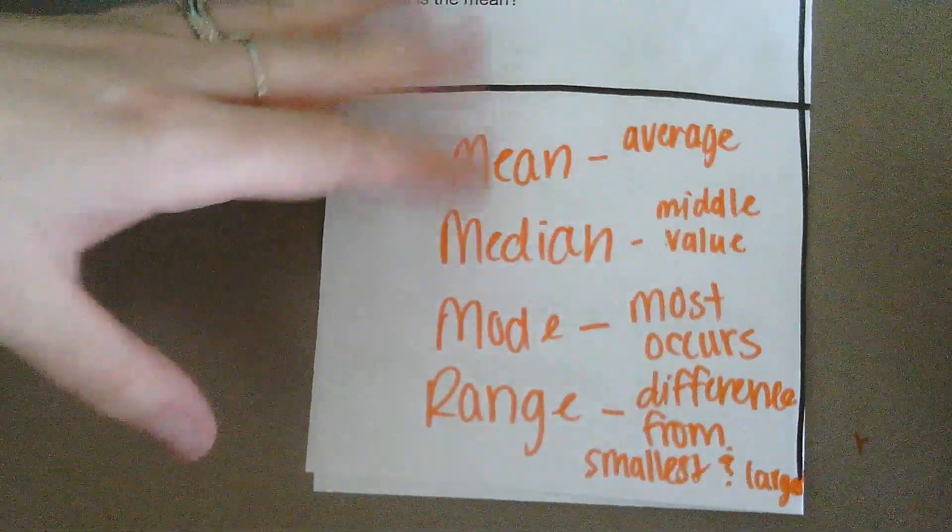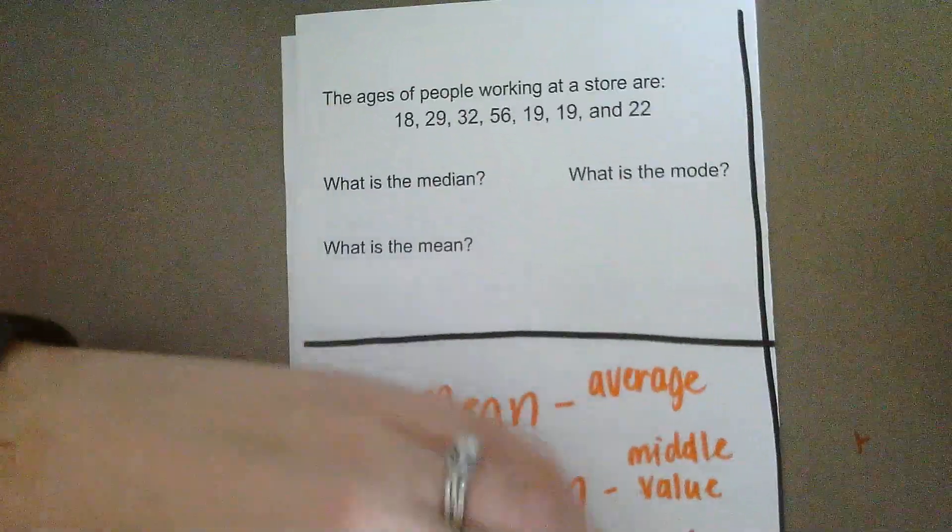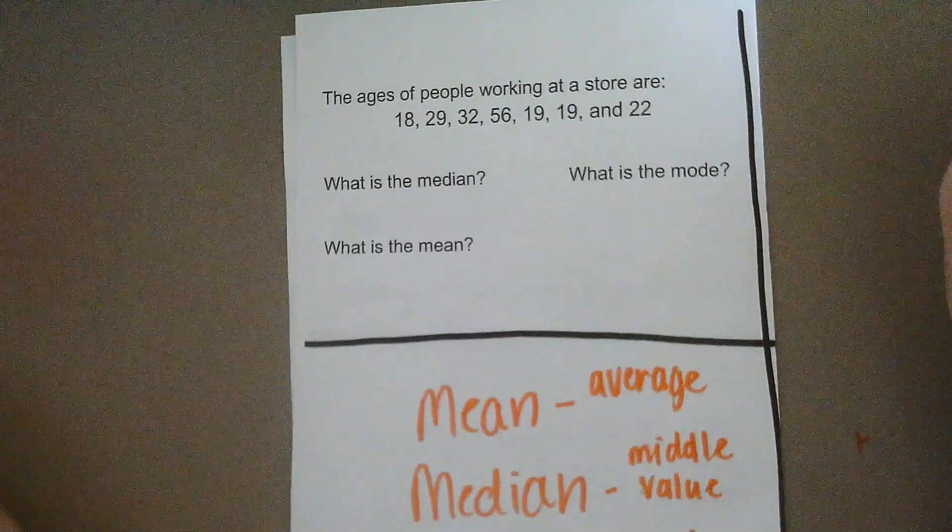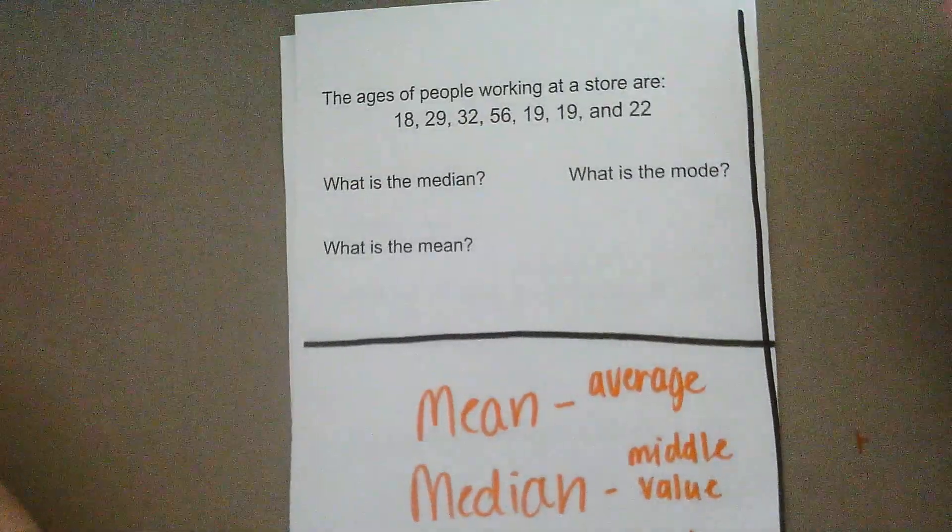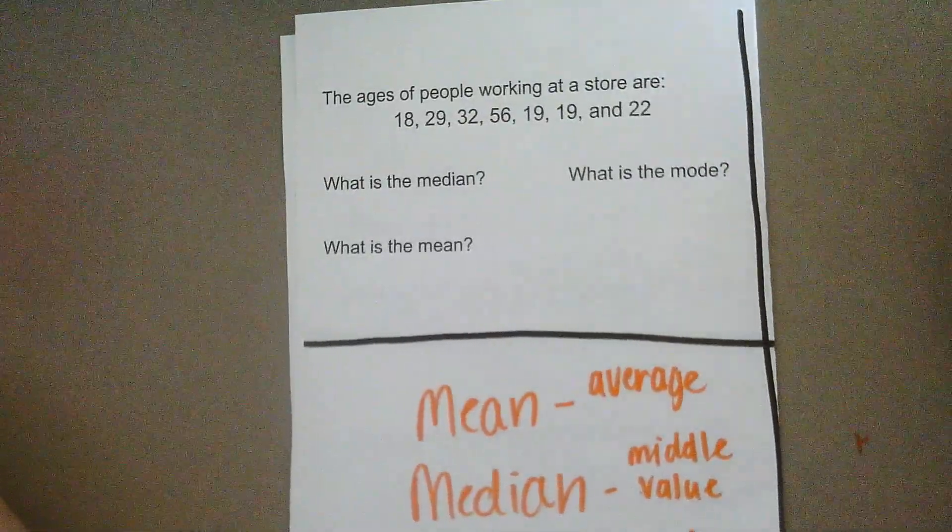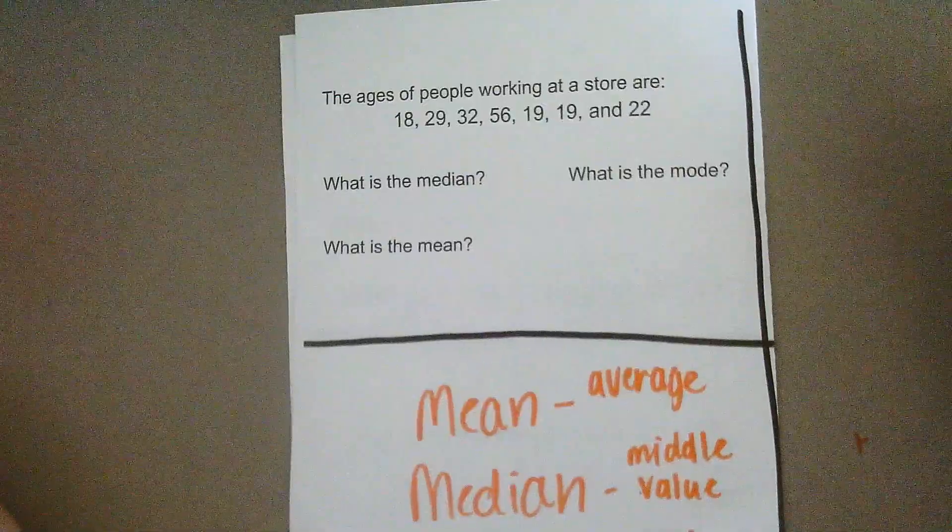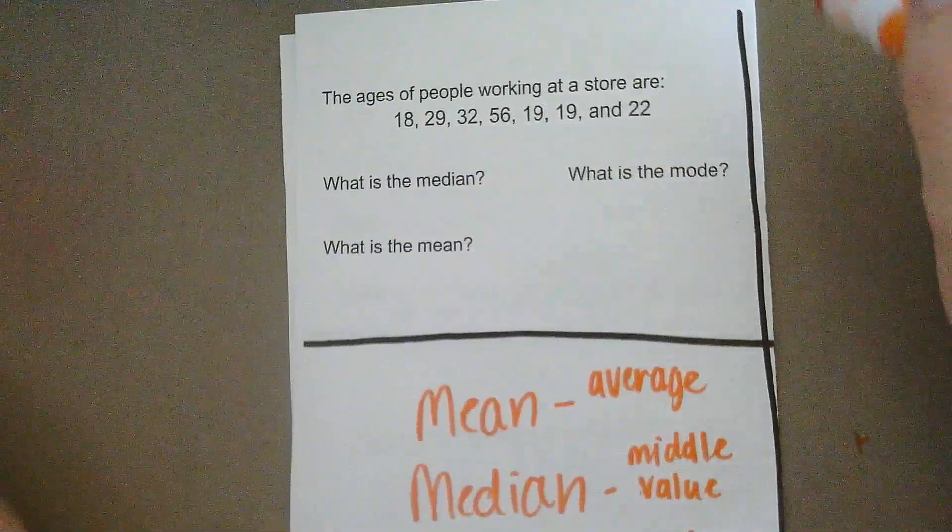So, here's how we find them. Looking at this example here, we have the ages of people working at a store are 18, 29, 32, 56, 19, 19, and 22 years old.